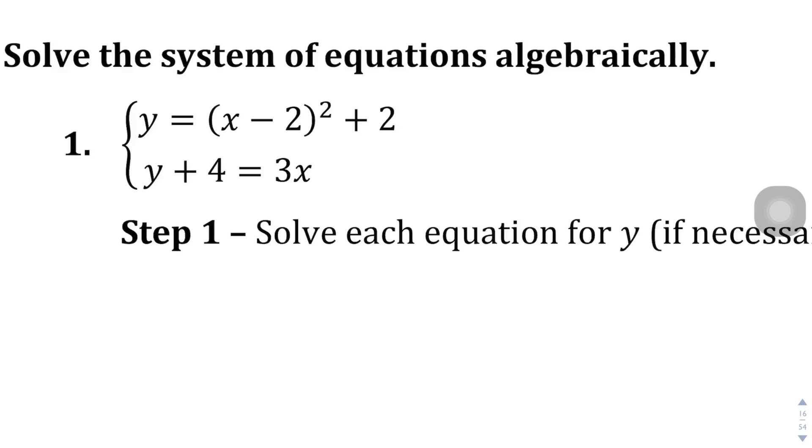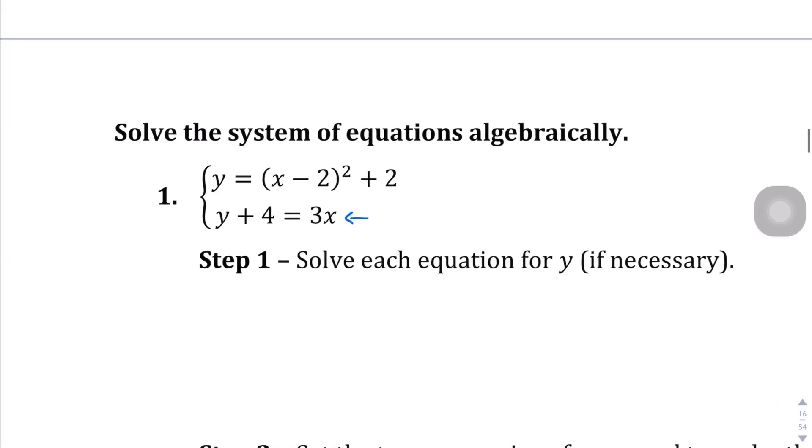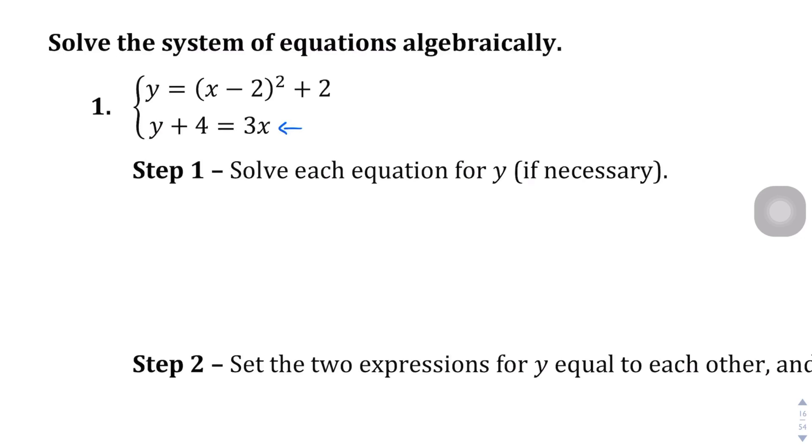So for example, let's take these two equations. We have y equals x minus 2 squared plus 2, and then we have y plus 4 equals 3x. Right now, it's not in a form where we can set them equal to each other easily. But if we manipulate the second equation just a little bit, we can get it into a place where it is equal. So for example, let's take that second equation, y plus 4 equals 3x, and set it equal to y.